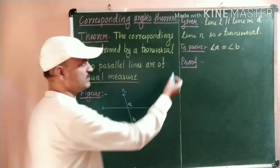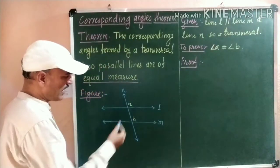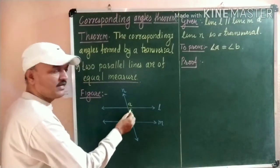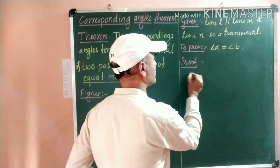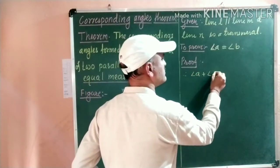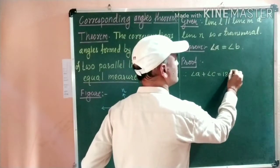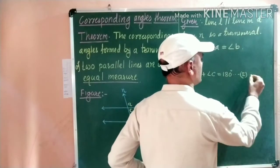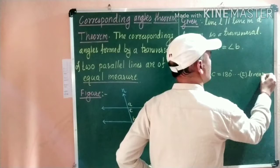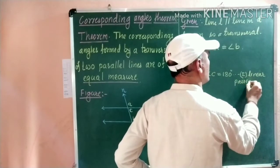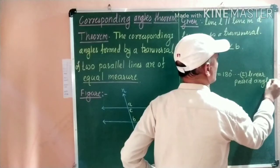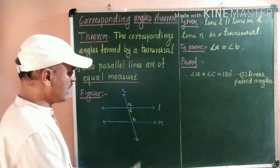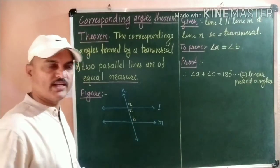How can we prove this? We know that angle A and angle C, which is linearly paired with angle A, are supplementary. Therefore, we write: angle A plus angle C is equal to 180 degrees. The reason is that they are linear pair angles. These two are linear pair angles.